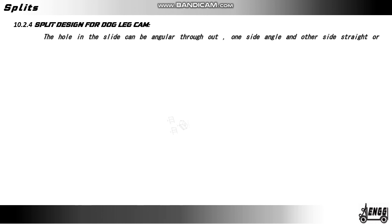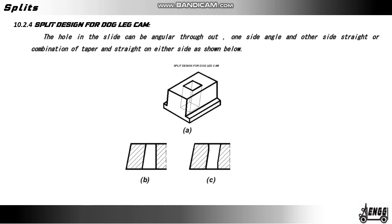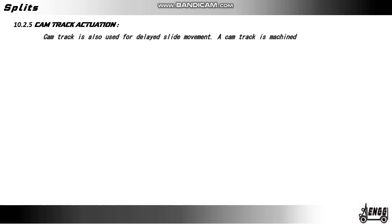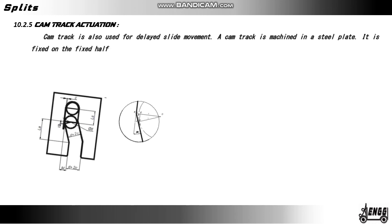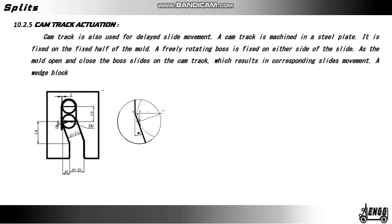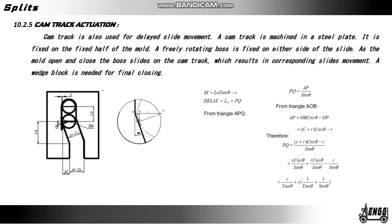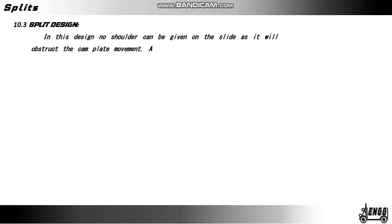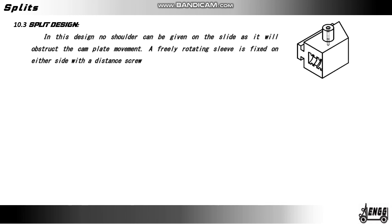The hole in the slide can be angular throughout, one side angled and the other side straight, or a combination of taper and straight on either side. Cam track actuation: a cam track is also used for delayed slide movement. A cam track is machined in a steel plate fixed on the fixed half of the mold. A freely rotating roller is fixed on either side of the slide. As the mold opens and closes, the roller slides on the cam track, resulting in corresponding slide movement. A wedge block is needed for final closing.